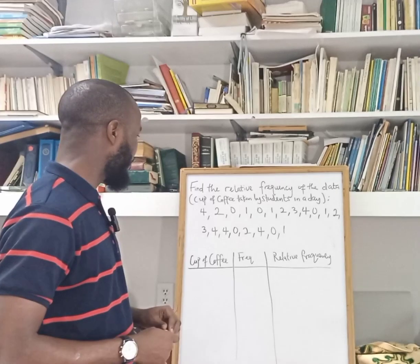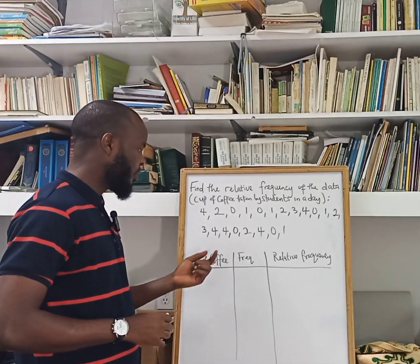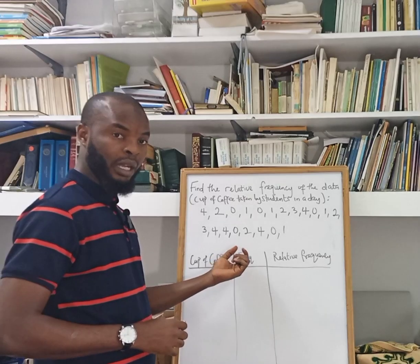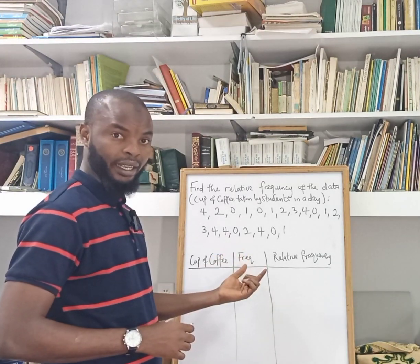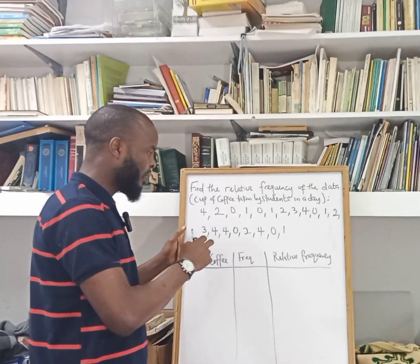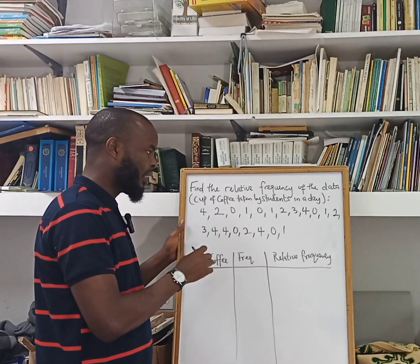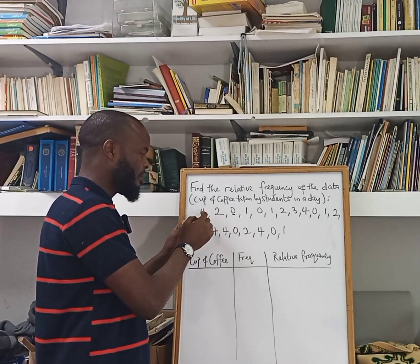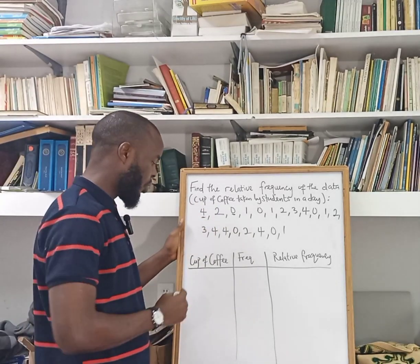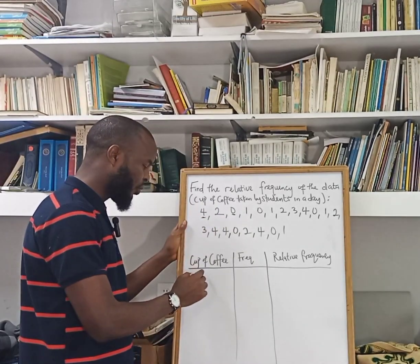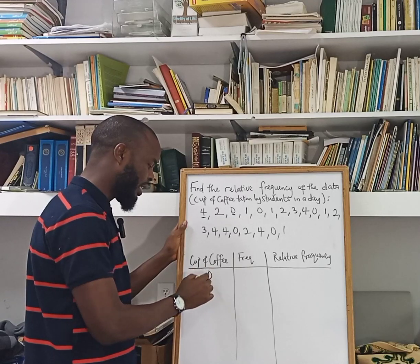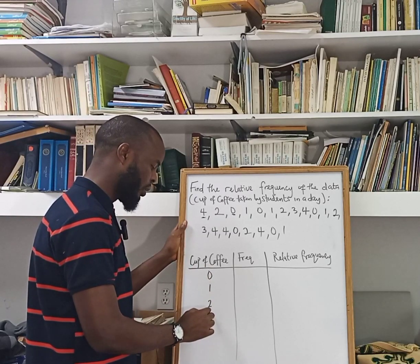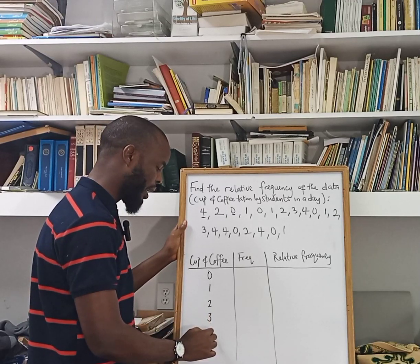So here we have the number of cups. In this question we are going to use the single value approach, which is known as ungrouped data. The minimum number of cups of coffee taken in a day by students is zero while the maximum is four. So under the cup of coffee column I am going to present the values: zero, one, two, three, and four.